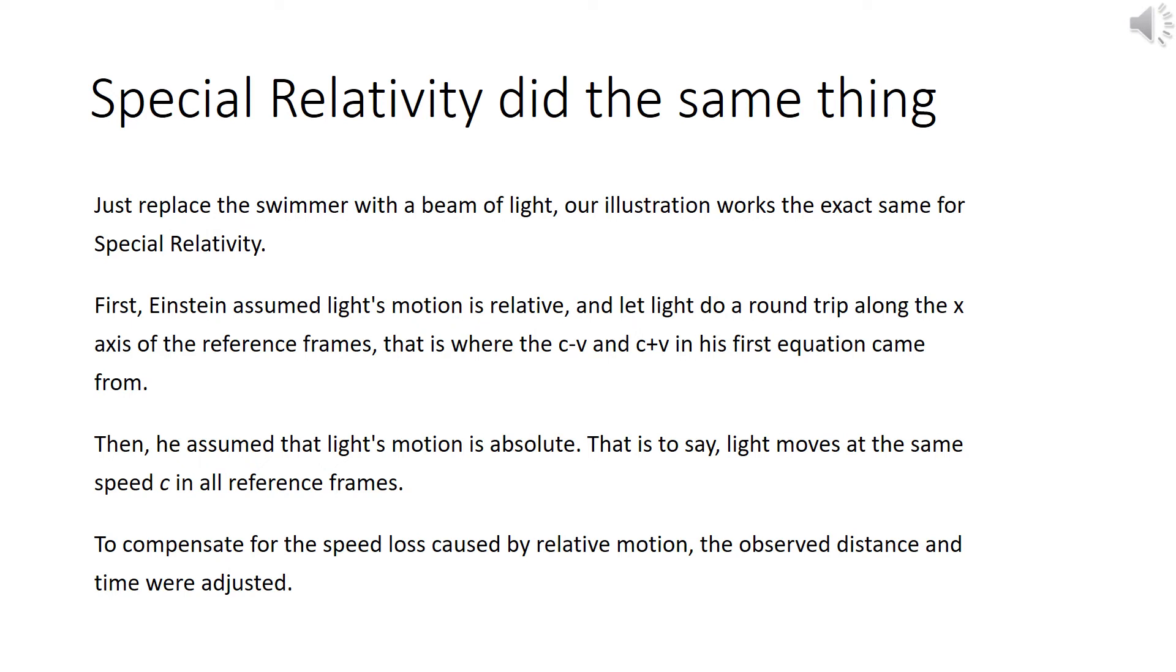First, Einstein assumed light's motion is relative and let light do a round trip along the x-axis of the reference frames. That is where the C minus V and C plus V in his first equation came from. Then, he assumed that light's motion is absolute. That is to say, light moves at the same speed C in all reference frames. To compensate for the speed loss caused by relative motion, the observed distance and time were adjusted.